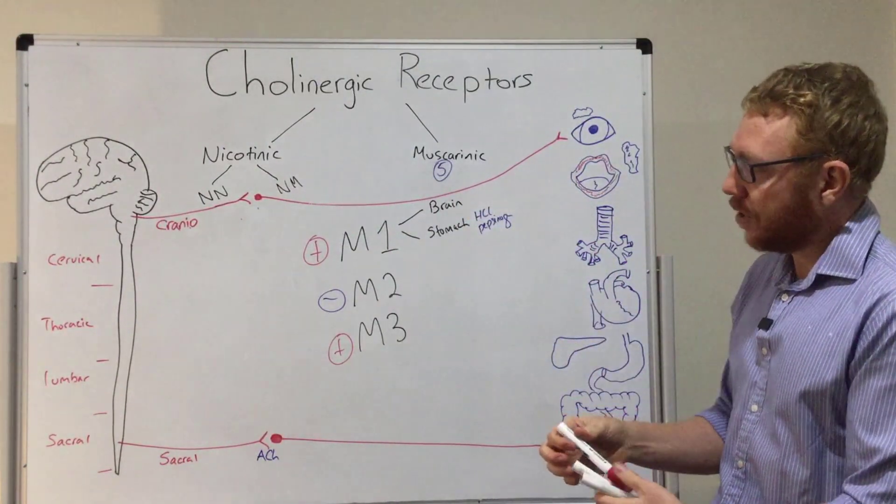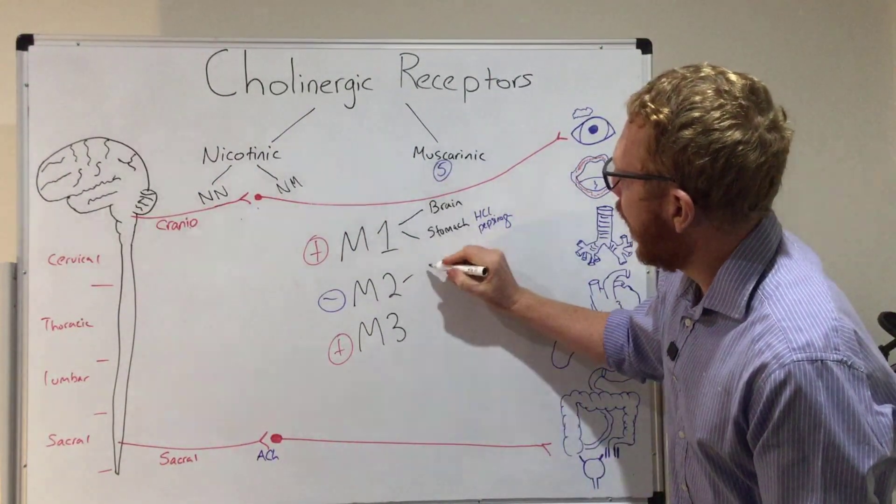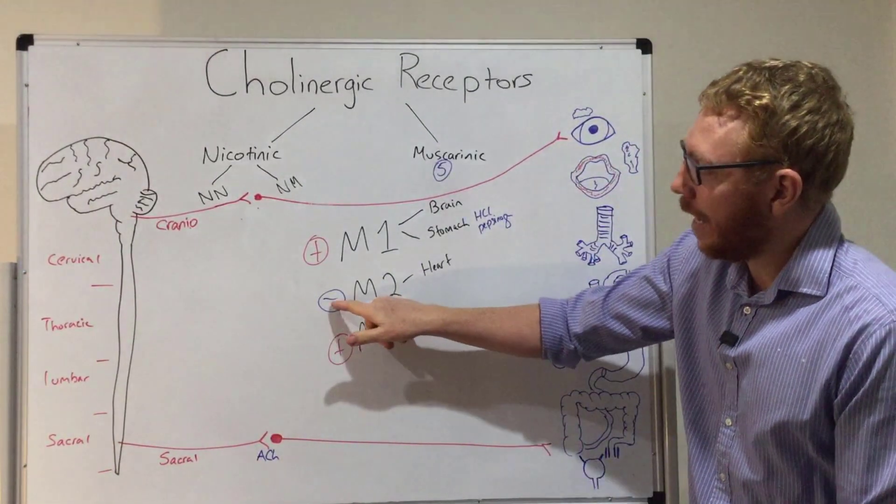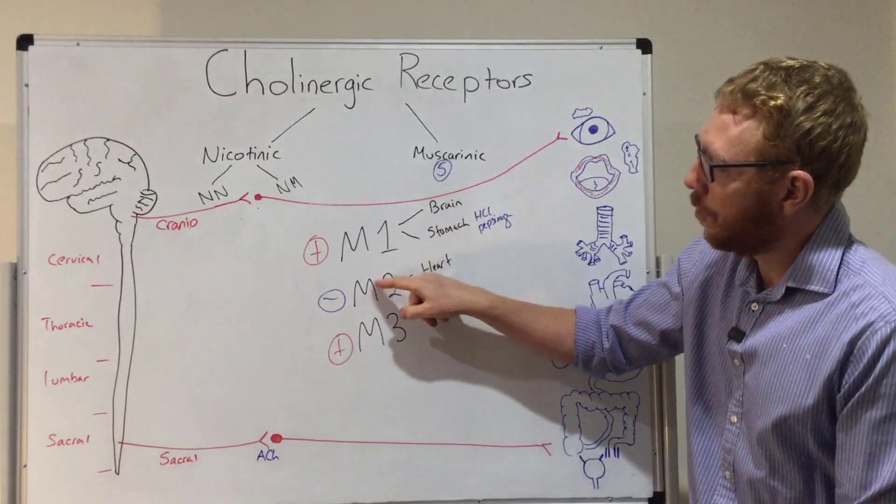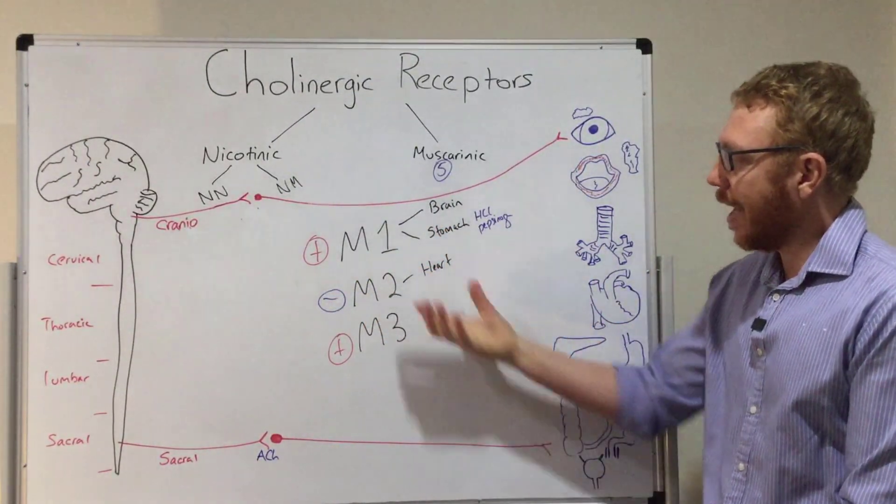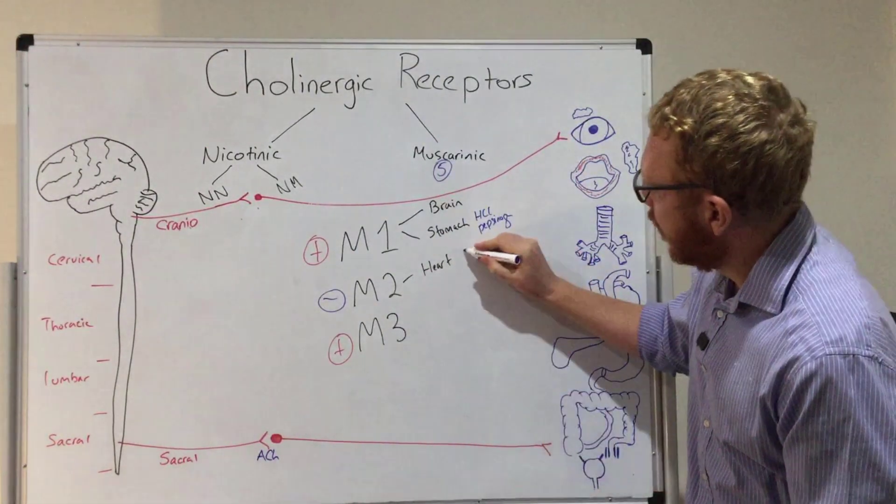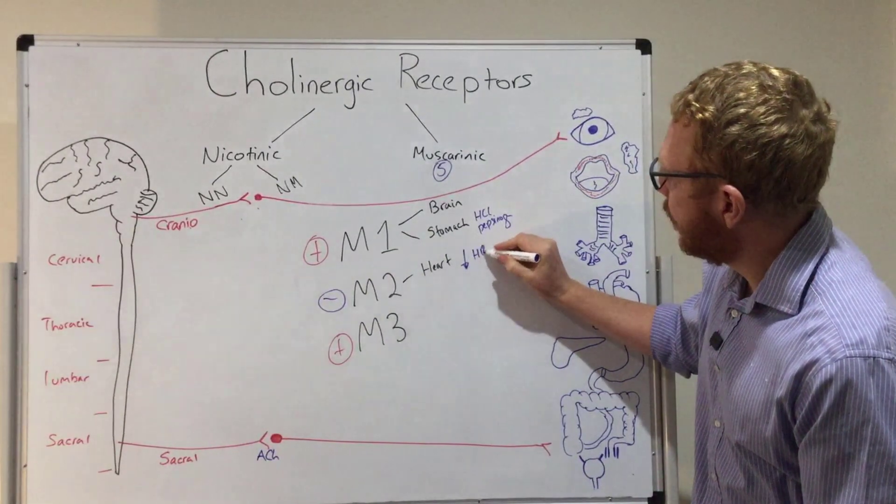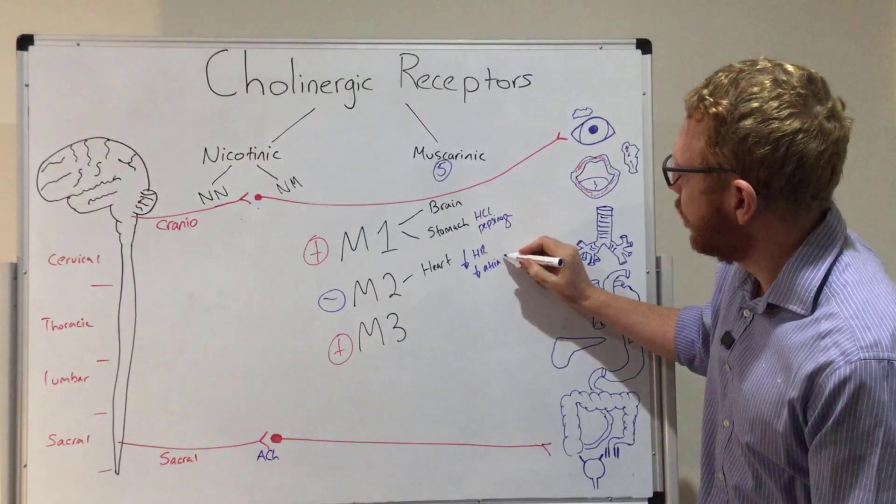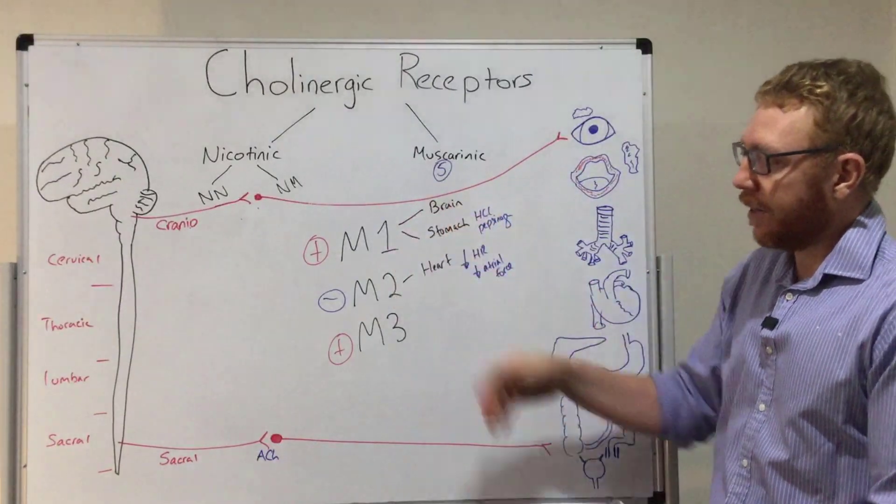M2, pretty much the only place we find M2 receptors is in the heart. So as you'd imagine, if ACH binds to M2 and we inhibit the heart, specifically the conduction system through the heart and the muscles of the heart, we're essentially just going to get a slowing in heart rate, but also we probably get a reduction in atrial force, contraction force. So that's two done, pretty simple.